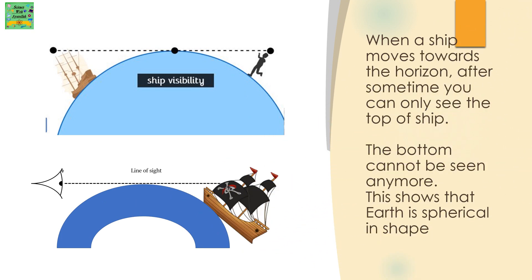When a ship moves towards the horizon, after some time you can only see the top of the ship. The bottom cannot be seen anymore. This shows that Earth is spherical in shape.